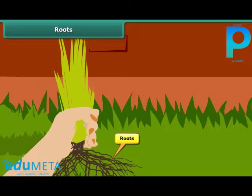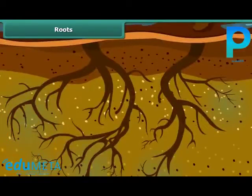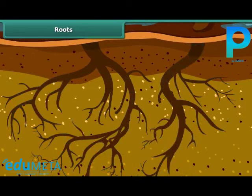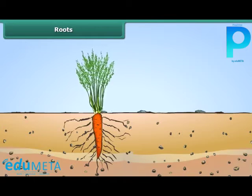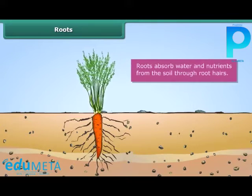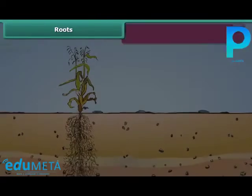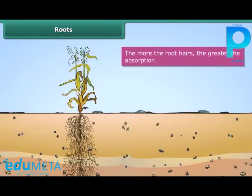All plants have roots. Roots play a crucial role in providing water and nutrients to the other parts of the plant body. Roots have hairs, and they absorb water and nutrients from the soil through these hairs. The more root hairs a plant has, the greater the absorption.